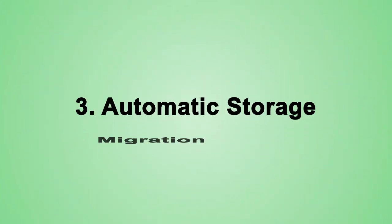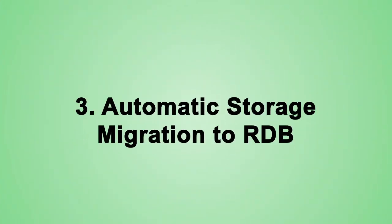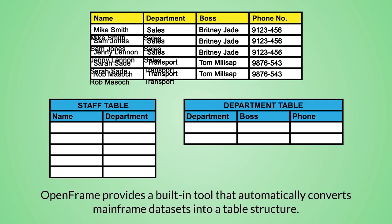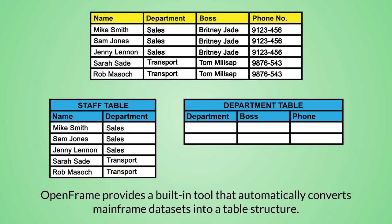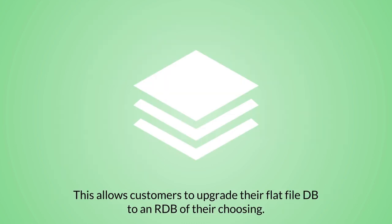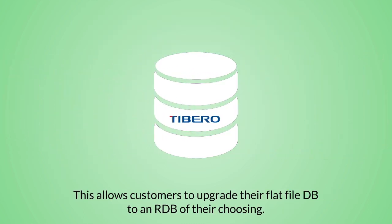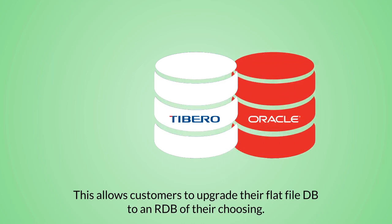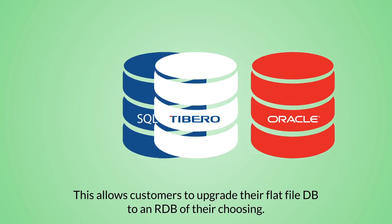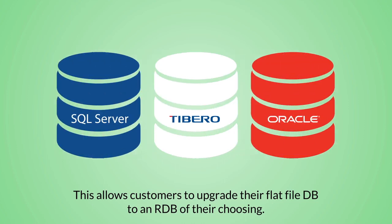Automatic storage migration to relational databases. OpenFrame provides a built-in tool that automatically converts mainframe datasets into a table structure, allowing direct migration to relational databases. This allows customers to upgrade their flat file database to a relational database of their choosing, such as Oracle, SQL Server, and Tibero.